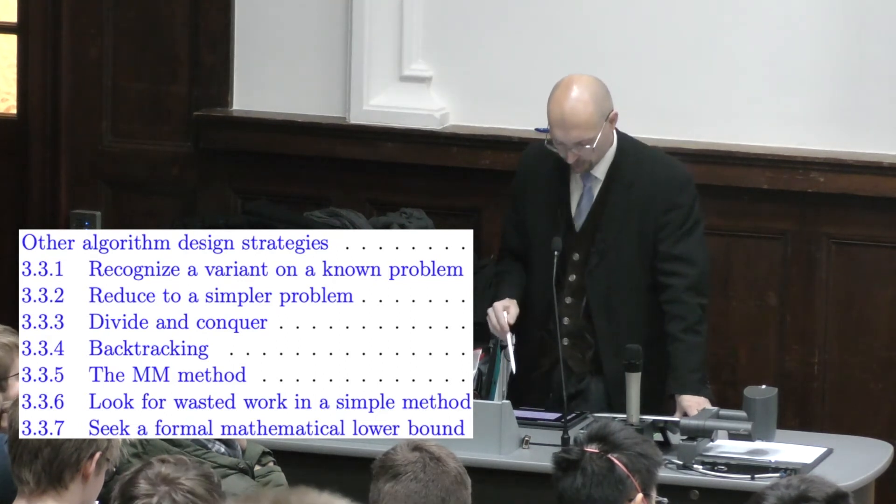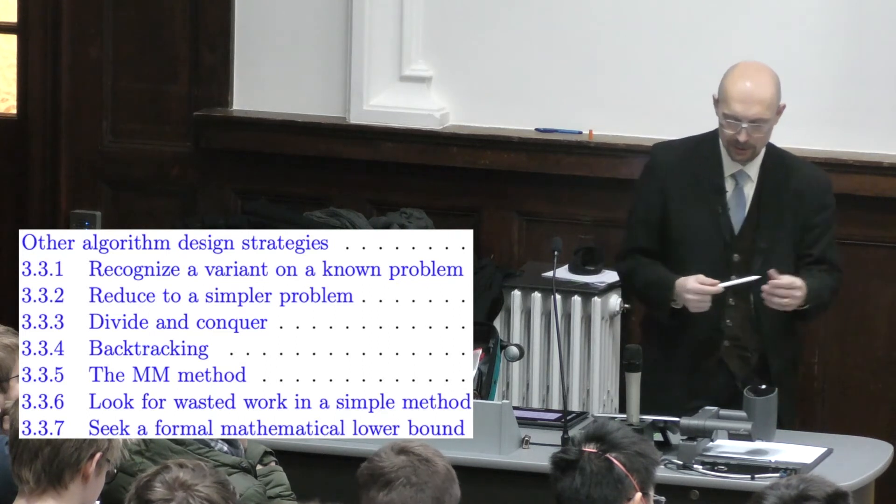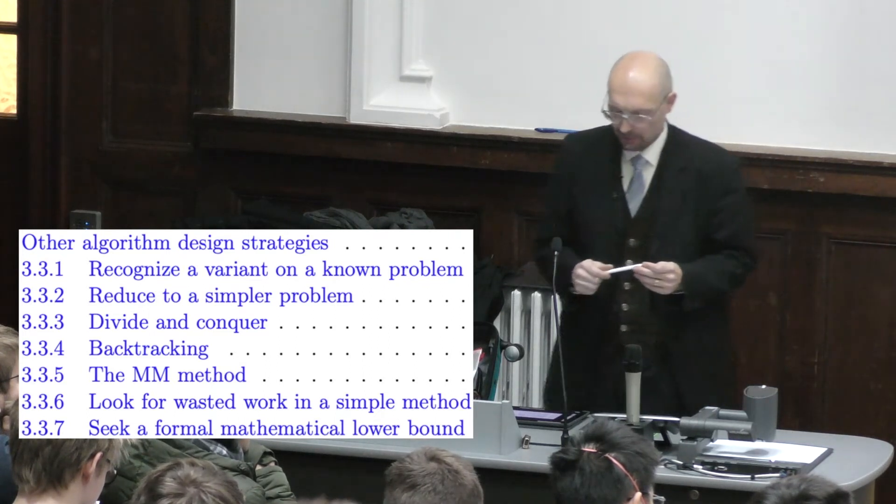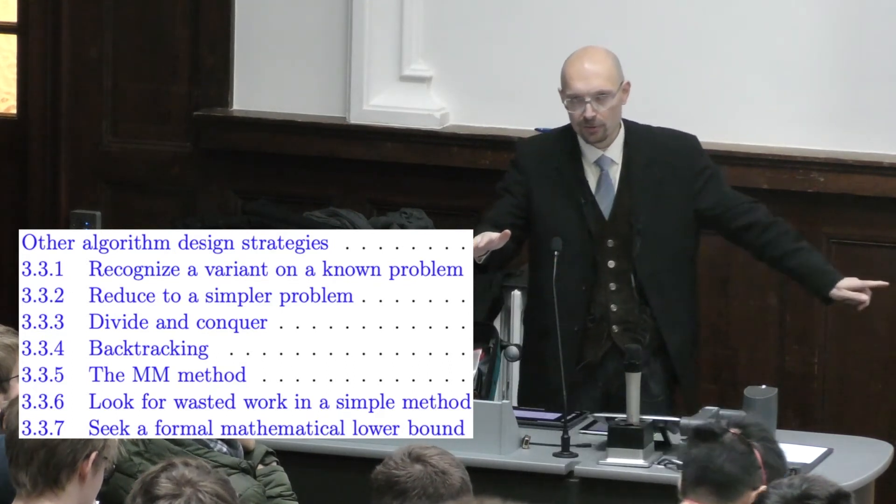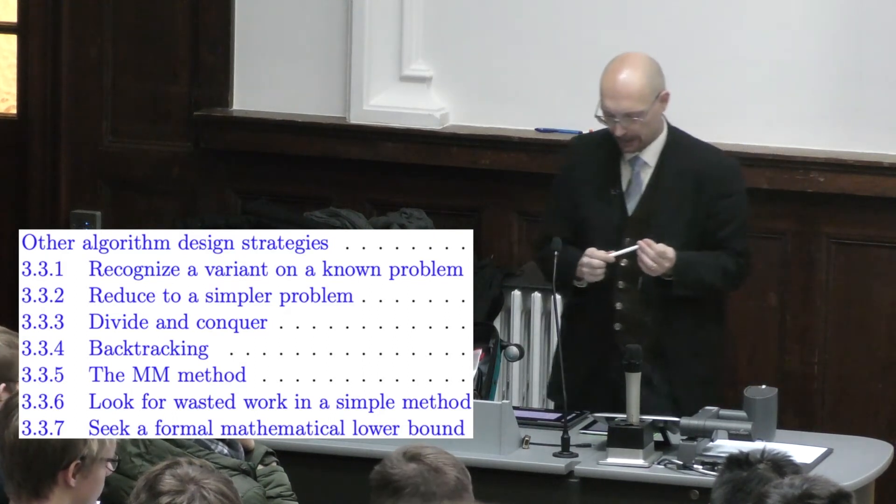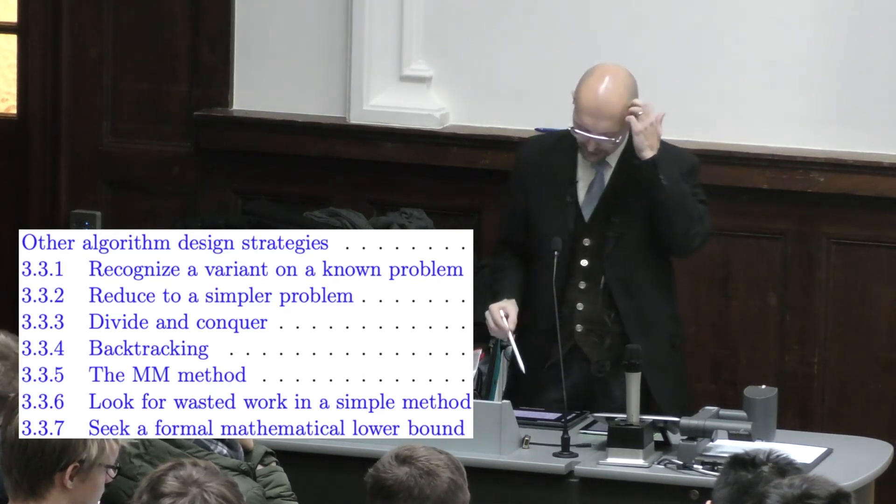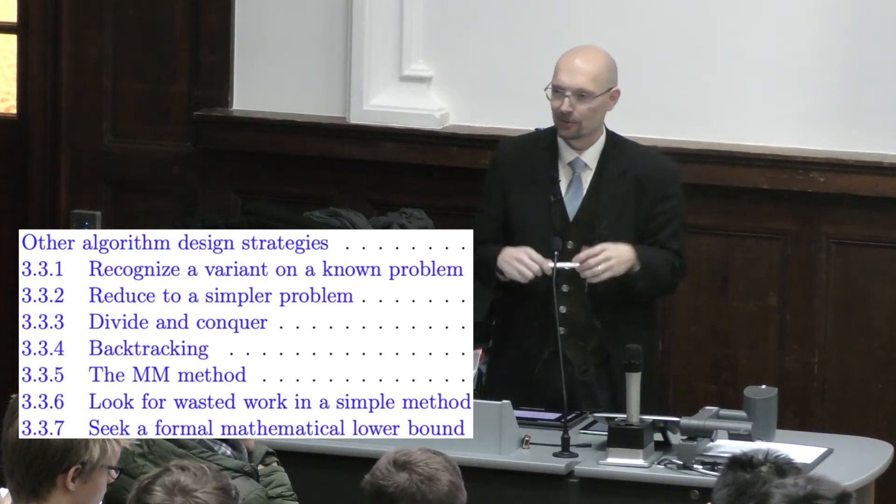Backtracking we have not used very much but it is something that you may see in graph problems a lot, where you try something and it doesn't work but you had a choice previously or you haven't fully explored. You might go back to the choice and try if this takes you somewhere else.